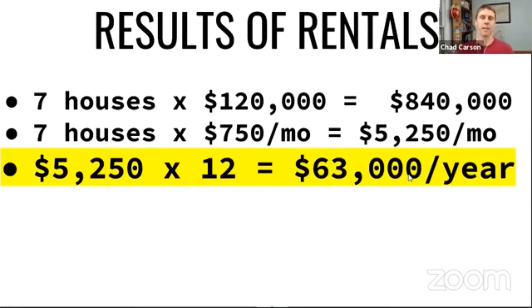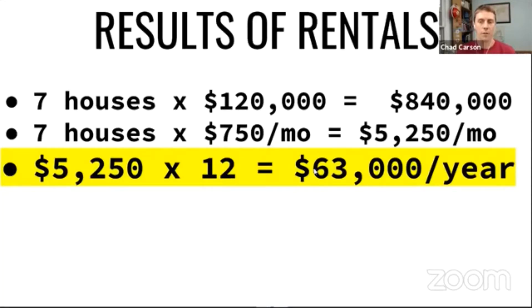Let me pause here for a second. Remember those numbers we talked about earlier? People said $60,000, $80,000, $50,000 a year. This $63,000 is right in the middle of that range — about the average that a lot of people need to cover to be financially independent.